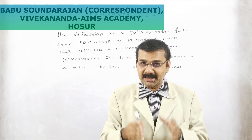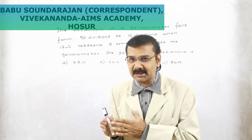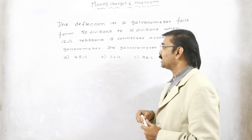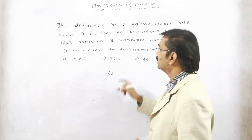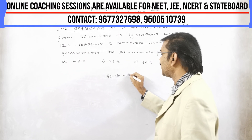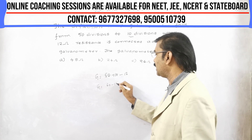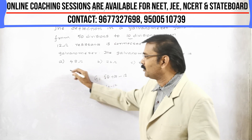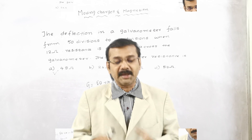Let us go for the shortcut trick in the same question. We are going to do this particular sum in just a simple step. The trick is: you write down 50, what is the next division? You write down 10, and you subtract — which is the shunt resistance 12. So 60 minus 12, that is G equal to 48 ohms, finished. We solve it in a single step without using any formula and without using any concept. Thank you for learning this magic trick.